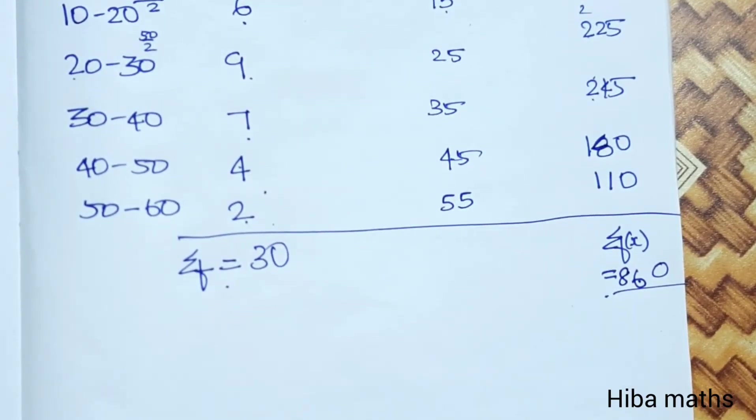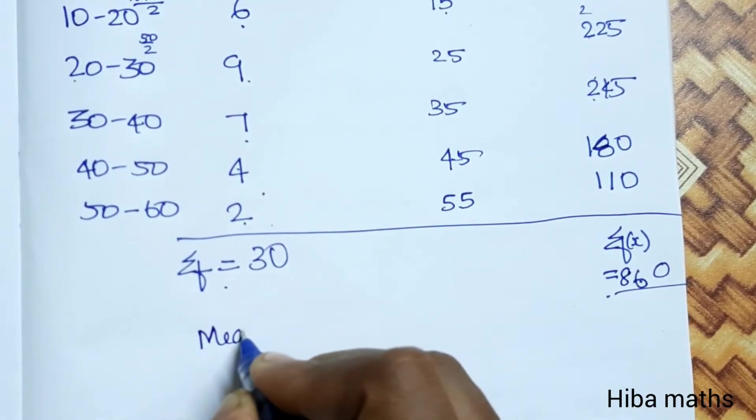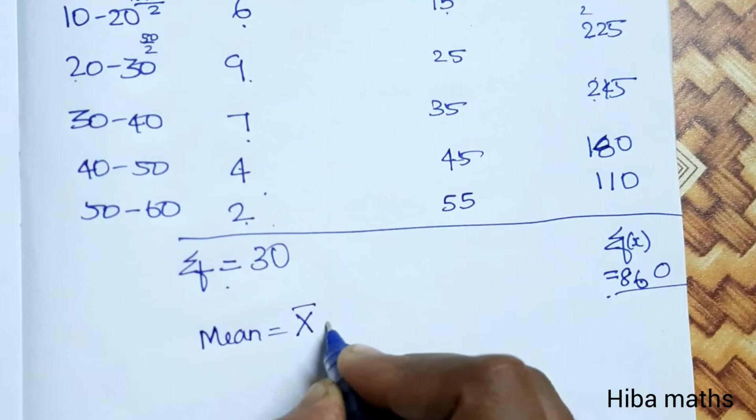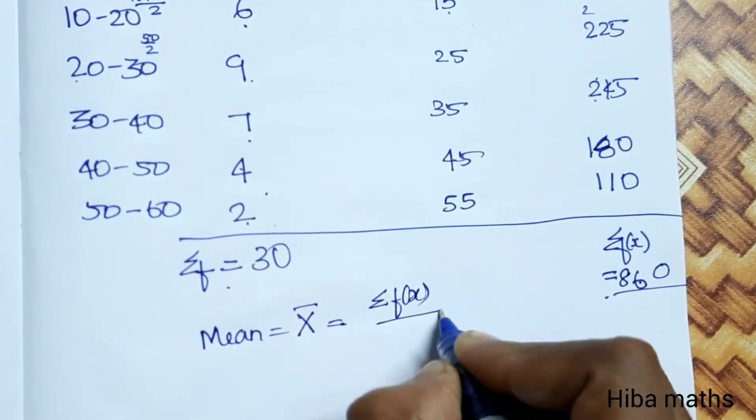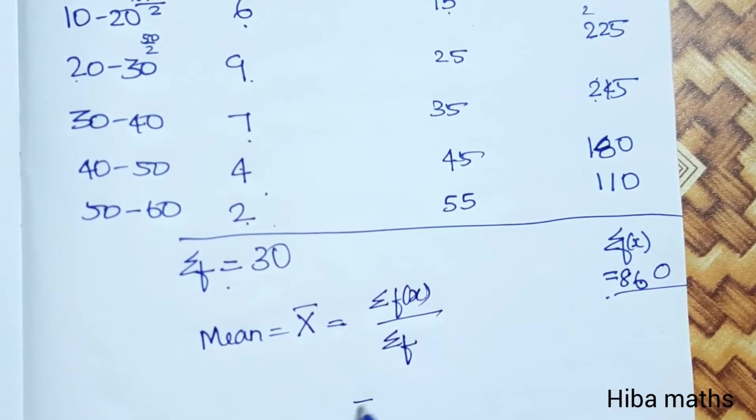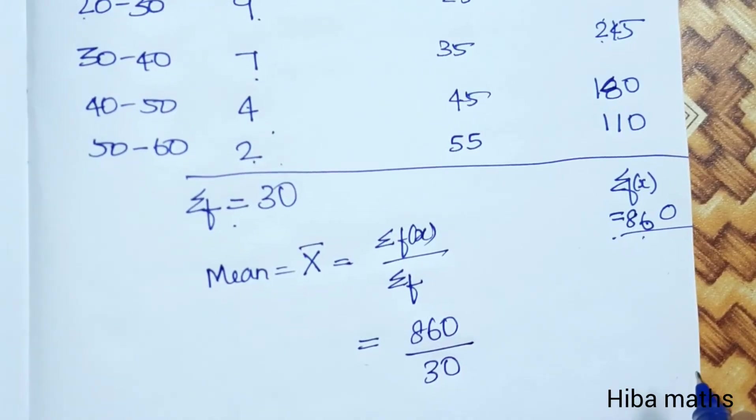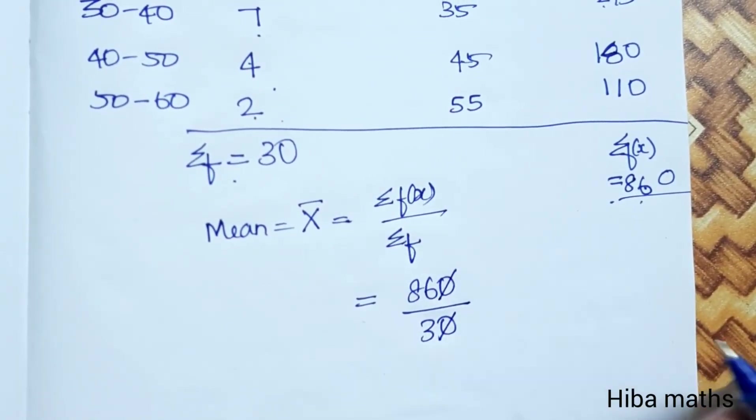Now mean is the formula: mean equals x-bar equals summation of fx divided by summation of f. Summation of fx is 860 divided by summation of f which is 30.